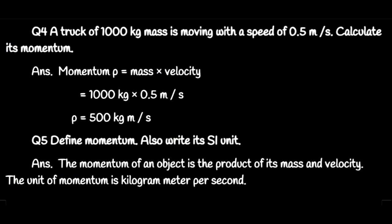Question number 4: A truck of 1000 kg mass is moving with a velocity 0.5 meter per second. Calculate its momentum. Mass is given 1000 kg, velocity 0.5 meter per second. Momentum equals m into v, 1000 into 0.5 equals 500 kg meter per second. Question number 5: Define momentum. Also write its SI unit. Momentum is the product of mass and velocity of the object. Its SI unit is kilogram meter per second.